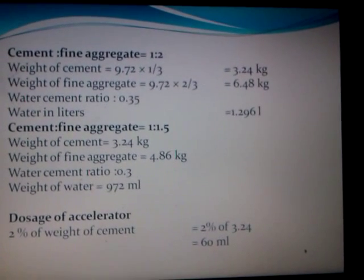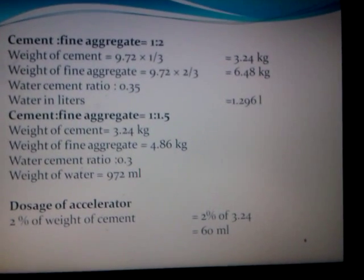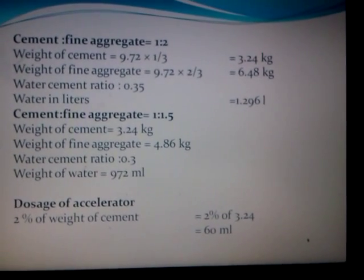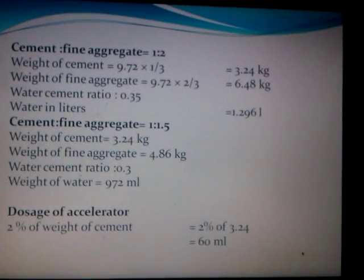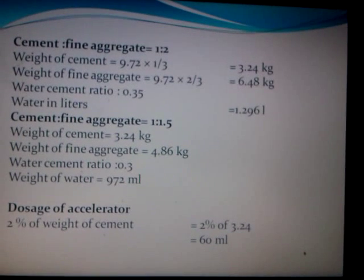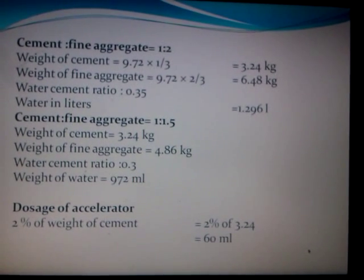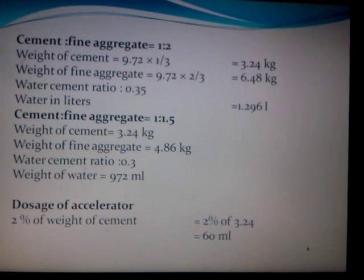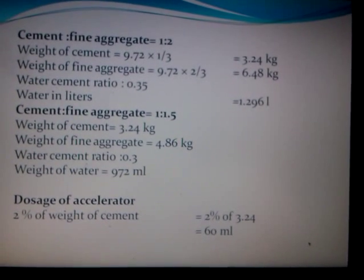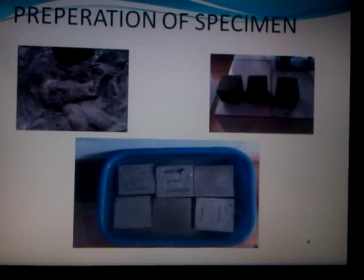The cement mix trial ratios used are 1:2 and 1:1.5, with respective weights of cement and fine aggregate listed. The dosage of accelerator is about 2% of the weight of cement, and for the three different ratios the different dosages of accelerator are listed accordingly.